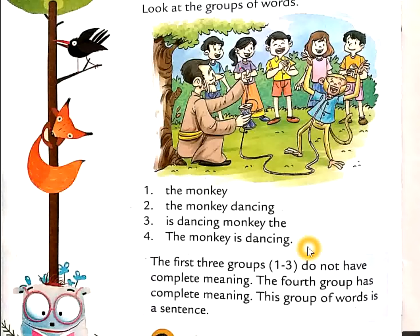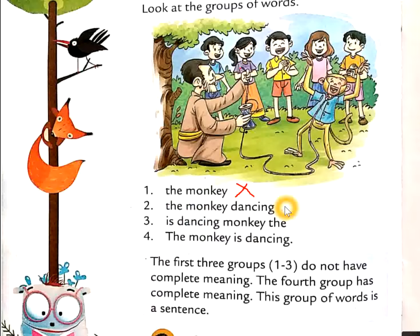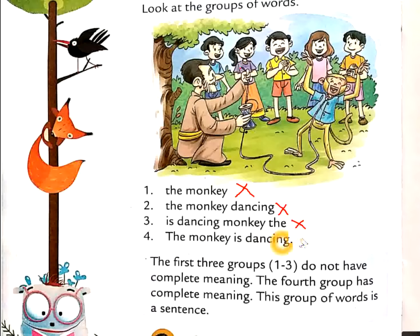Ismein aapko kaunsa wala sentence correct lag raha hai? The monkey — no, this is wrong. Groups of words hai lekin koi meaning nahi hai ismein. The monkey dancing — ismein bhi yeh complete meaningful sentence nahi hai. Is dancing monkey the — yeh arranged nahi hai properly. Ek jo sequence hota hai sentence mein, usmein yeh arranged nahi hai.